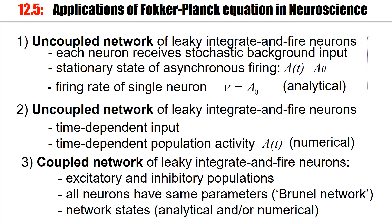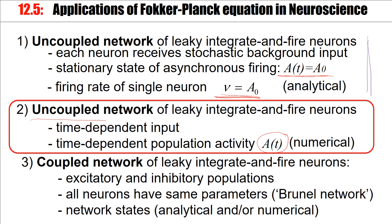That was the uncoupled network. We found that we can calculate the single neuron rate equal to the population activity, which is given by the flux at threshold, and we assumed we are in a stationary state. Now let's stay with the uncoupled network but consider a time-dependent input — then the population activity itself will also be time-dependent. In that case a direct analytical solution is no longer possible, but we can use the Fokker-Planck equation for numerical integration.